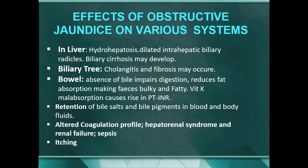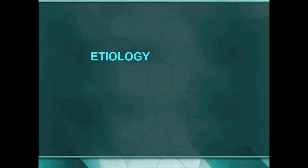The patient's PT INR will be deranged. Retention of bile salts and bile pigments in the blood and body fluids results in jaundice — that is yellowness of the body — along with an altered coagulation profile, hepatorenal syndrome, renal failure, and the patient may go into sepsis. Because of these bile salts, the patient develops itching all over the body.